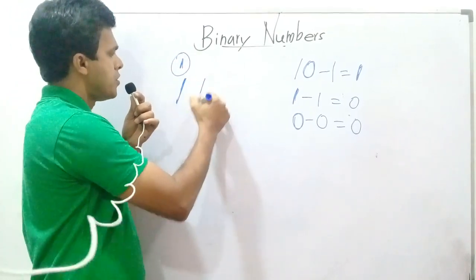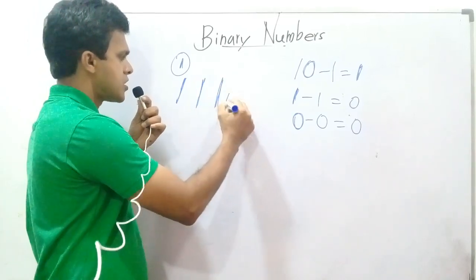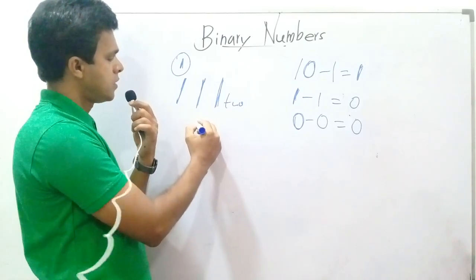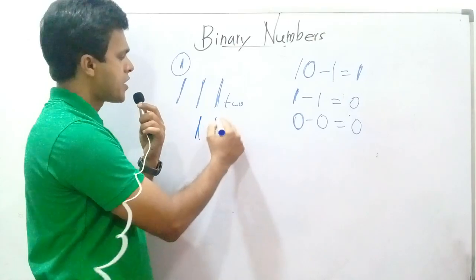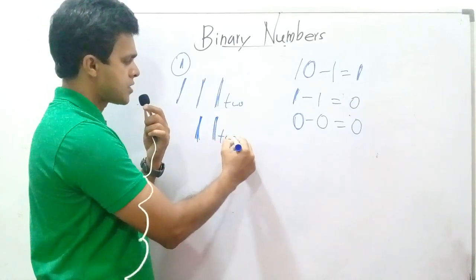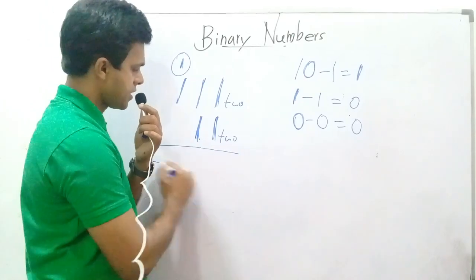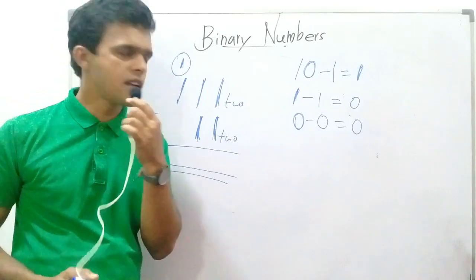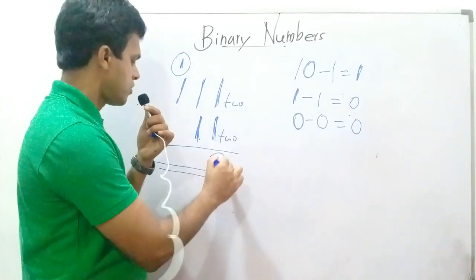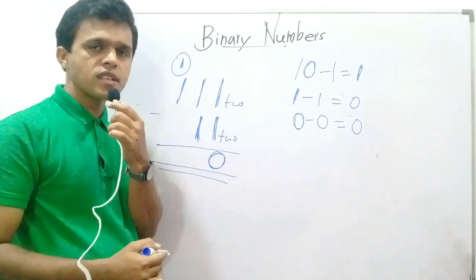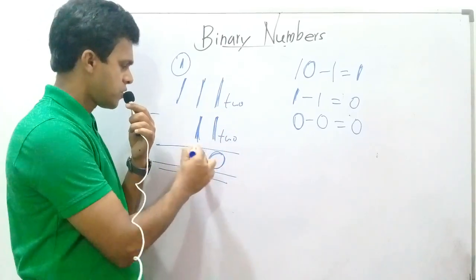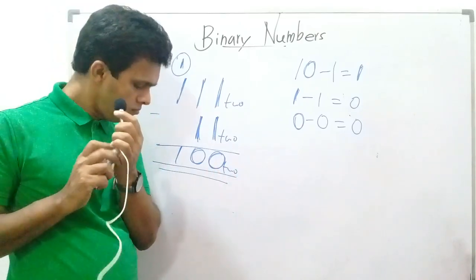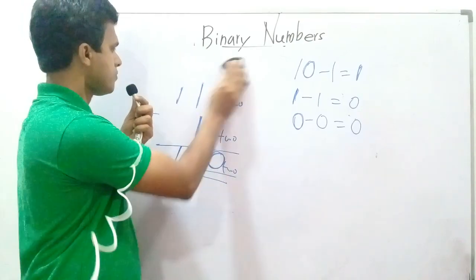Let's do a sum. 1111 in base 2. The base is 2. Let's subtract. 1 minus 1 — what is the answer? 1 minus 1 equals 0. 1 minus 1 equals 0. The base is 2.